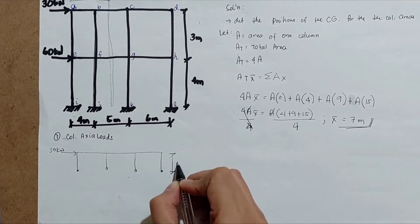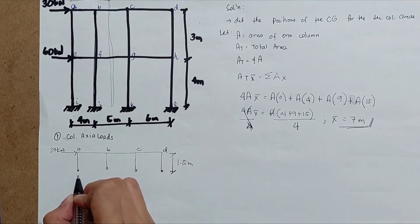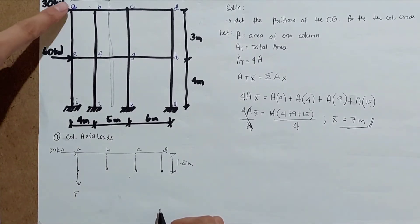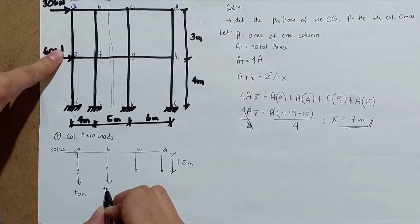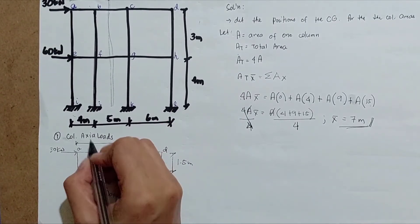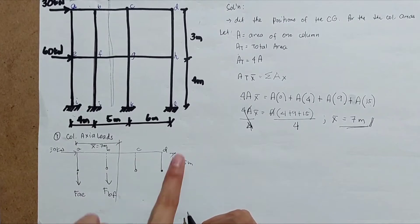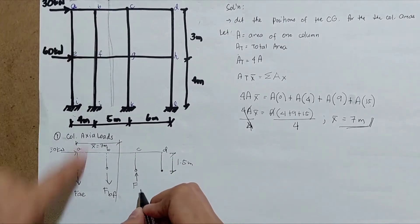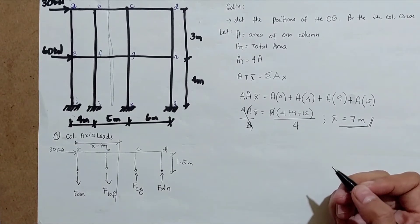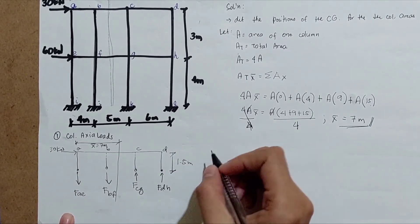We plot the half-height as 1.5 meters. The forces are labeled: force FAE, force FBF at their respective columns. At the CG location (7 meters from reference), we note that forces acting downward on the lateral load side must act upward on the opposite side. We also place force FCG and force FDH accordingly.